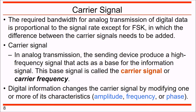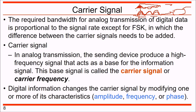What is a carrier signal? Your actual information signal may have low frequency or low energy, so it may get attenuated and not reach far. For this you use a carrier signal. Think of it like a train - your signal is the passenger and the carrier is the train. The signal puts itself onto the carrier, the carrier reaches the destination, and the destination receives the signal. The required bandwidth for analog transmission of a digital signal is proportional to the signal rate, except for FSK where the difference between carrier signals must also be added.